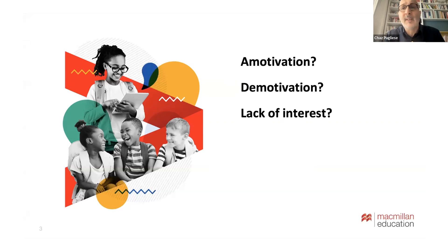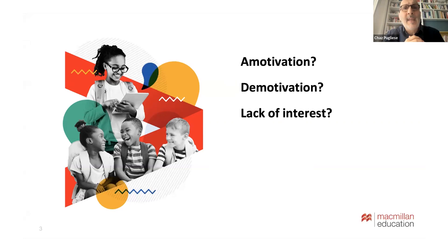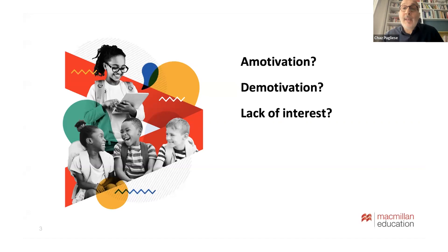When we talk about motivation — why students learn, why they come to school, why they take English classes — we need to distinguish between amotivation, demotivation, and lack of interest. Amotivation is serious: a student shows no desire to learn whatsoever and doesn't want to be there. Demotivation is less serious — a student seemed motivated at the beginning of a class or semester but lost it along the way.